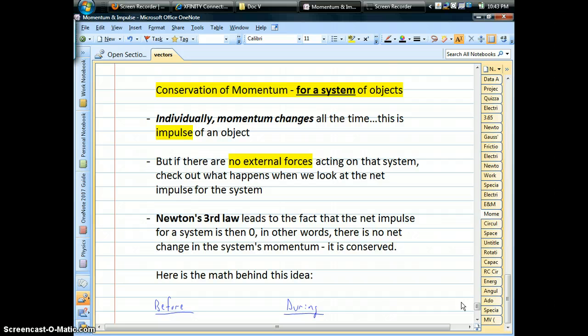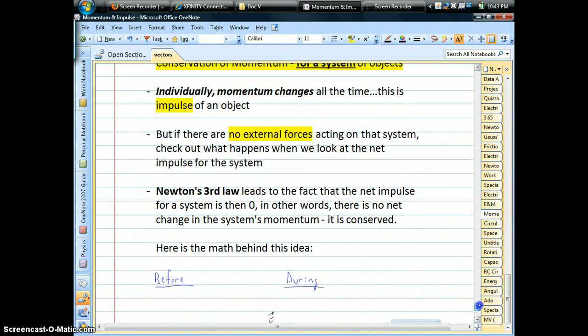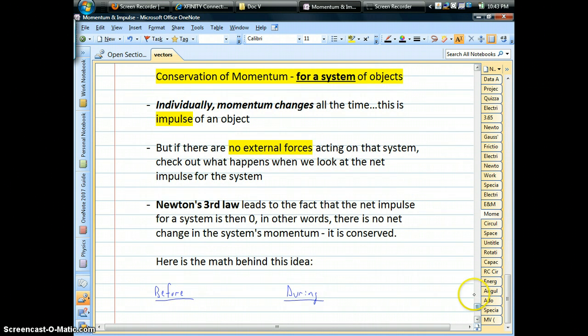Obviously, individually, if you're playing billiards, if two pool balls are moving in and they collide with each other, they're going to bounce off each other, they change speeds, they change directions. So individually, momentum changes all the time for objects. That's why we have this idea of impulse. And keep in mind, impulse is really just delta P.